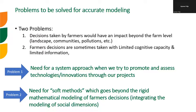For problem one, the literature came with solutions where system approaches have been used to promote and assess technologies and innovations. For problem two — limited cognitive capacity and limited information — there was a set of soft modeling methods which go beyond the rigid mathematical modeling of farm decisions to integrate the modeling of social dimensions and institutional dimensions.